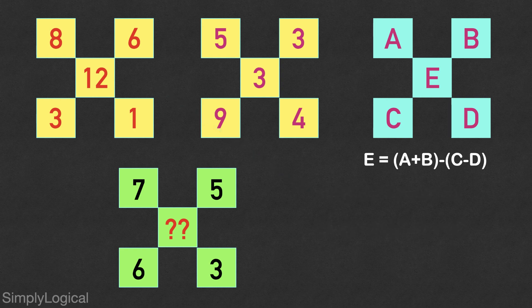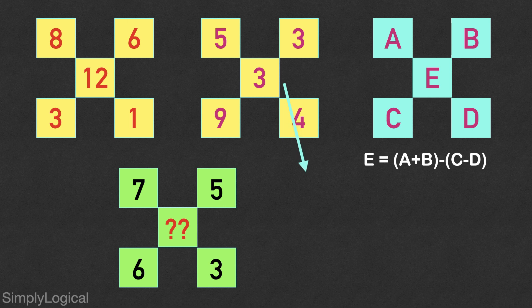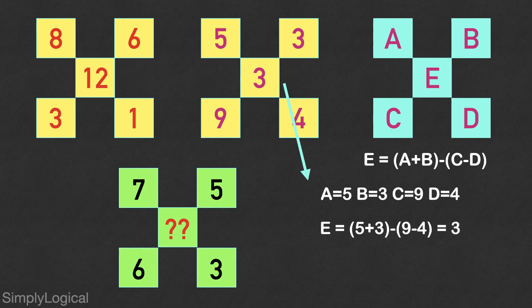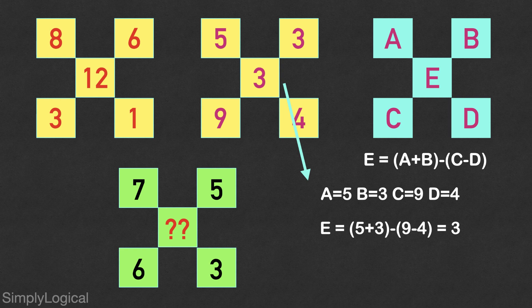Similarly in the second figure, A equals 5, B equals 3, C equals 9 and D equals 4. According to the logic, the expression becomes 5 plus 3 minus of 9 minus 4, which is equal to 8 minus 5, which is equal to 3 and which is the number associated with the letter E.